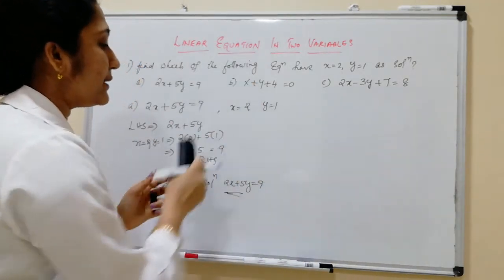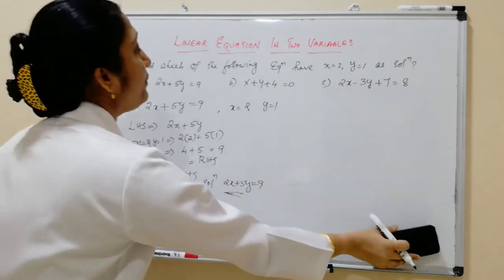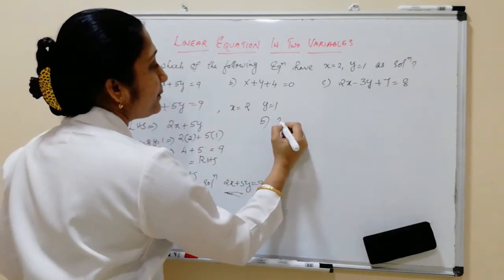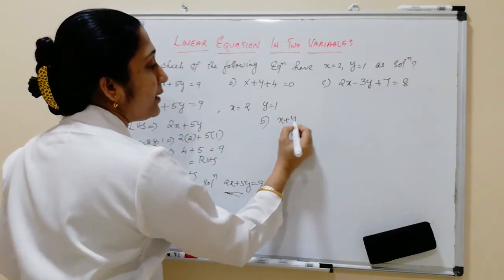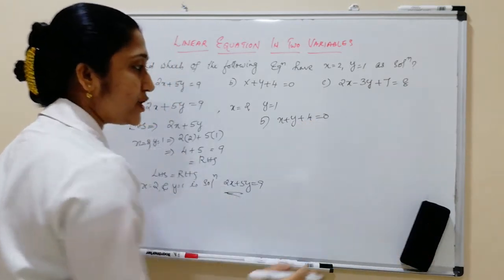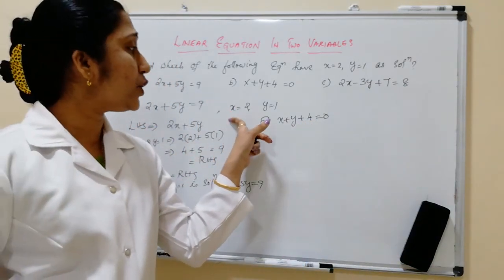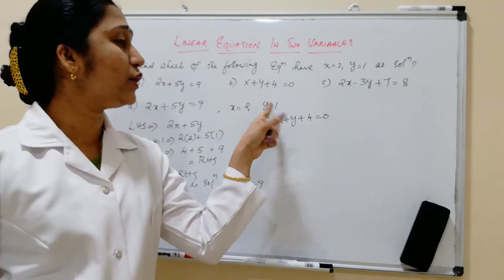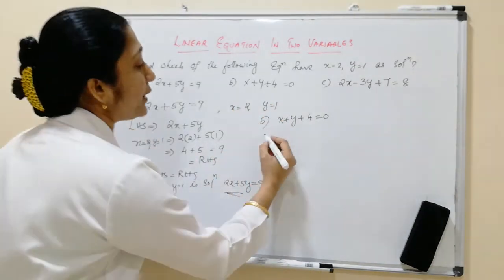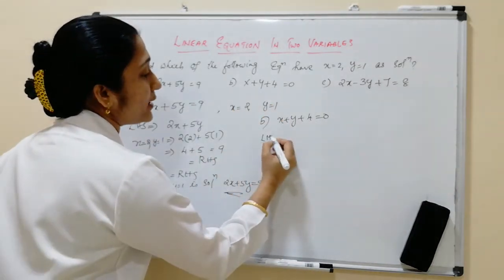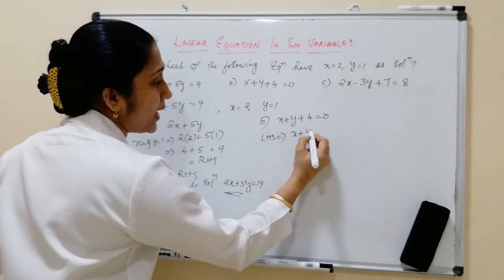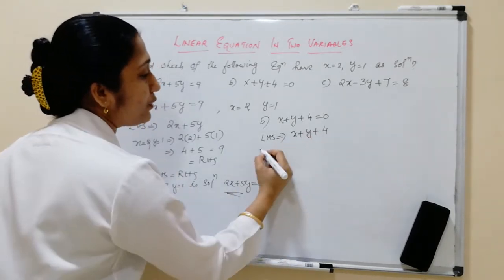Next, let us take the second problem. The equation given is X plus Y plus 4 is equal to 0. We have to check whether X equal to 2 and Y equal to 1 is a solution or not. We take LHS, which is X plus Y plus 4.